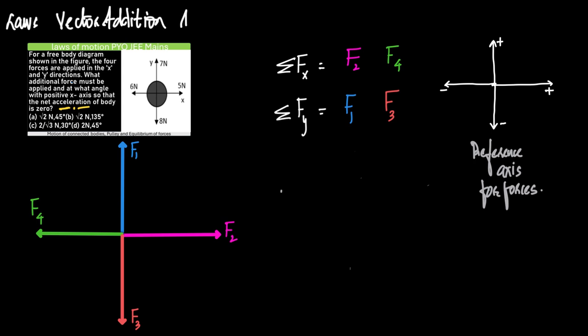To be more precise, vector A plus minus vector B is actually equal to vector A minus vector B. This means that the difference of two vectors is actually the addition of one vector to the opposite of the other. Why did I say this? You will get to know it after solving the question.